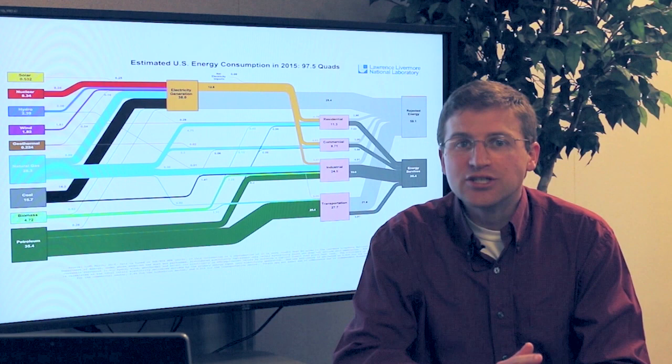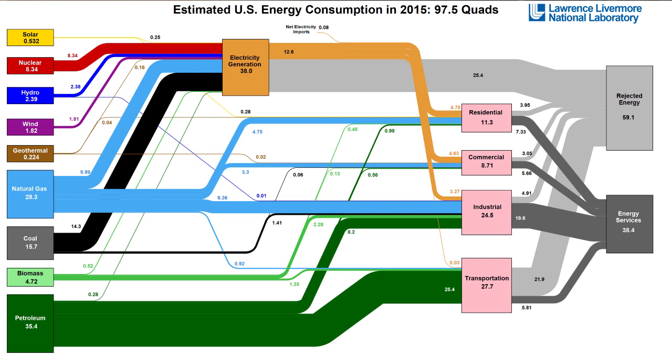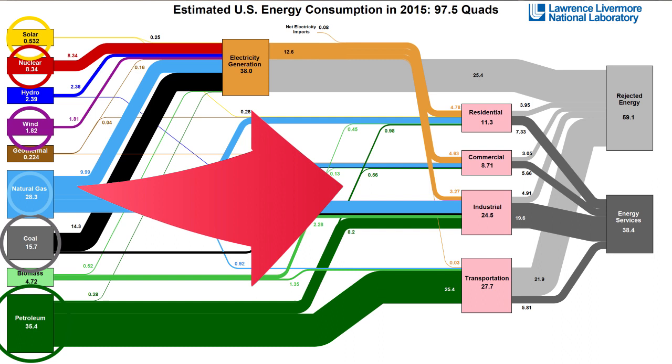The chart is generally read from left to right. On the left-hand side are our energy resources: wind and solar, nuclear energy, coal, oil, and natural gas. Energy flows from those resources through our energy system.